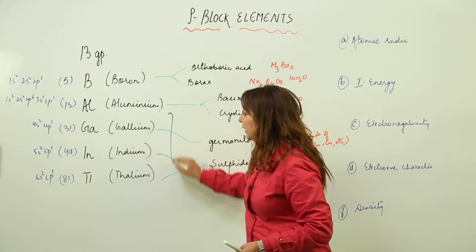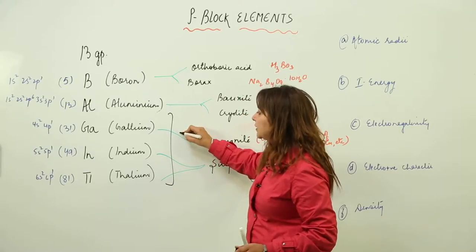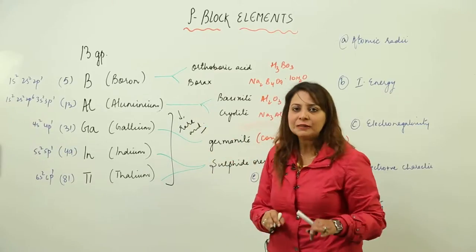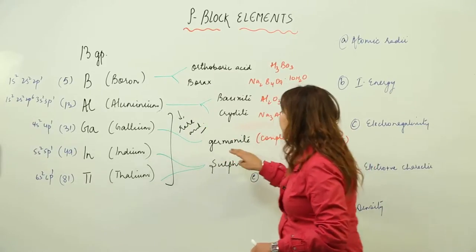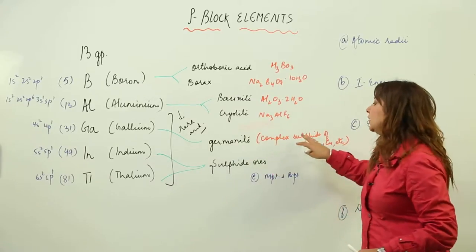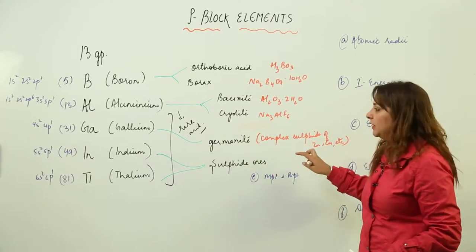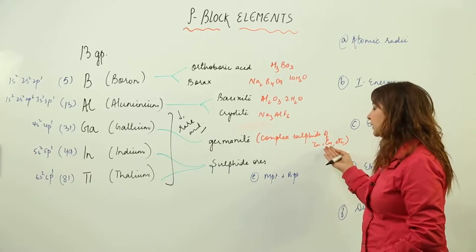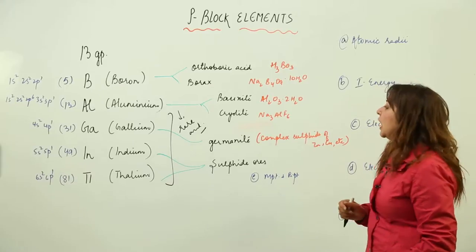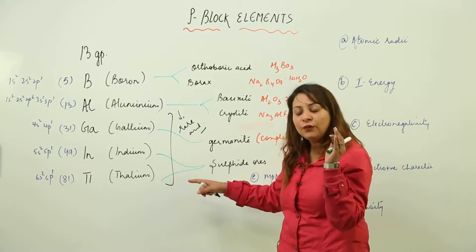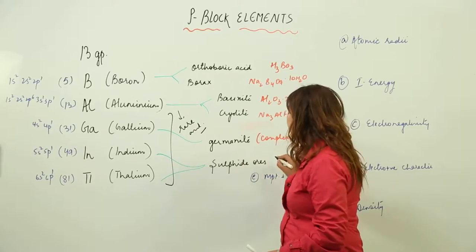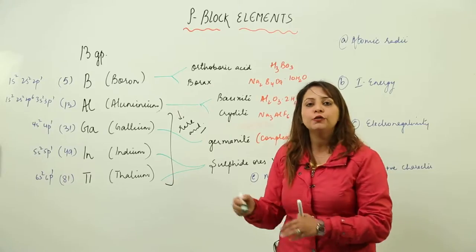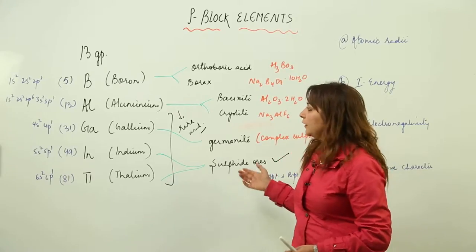Gallium, indium, and thallium are present in rare amounts compared to aluminium. Gallium occurs as germanite, which is a complex sulfide ore containing gallium with sulfur along with other elements like zinc and copper. Indium and thallium are very less abundant and they occur in combined form as sulfide ores.